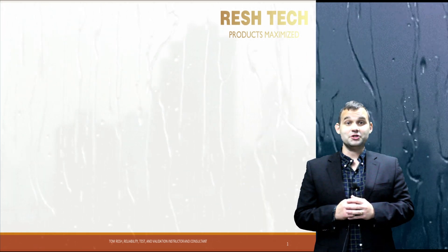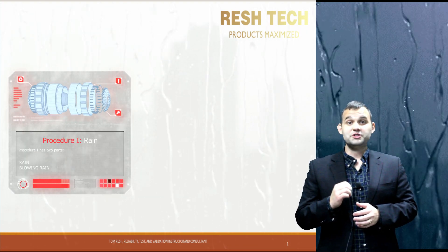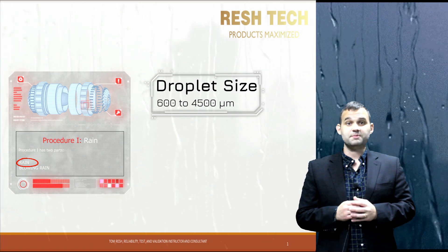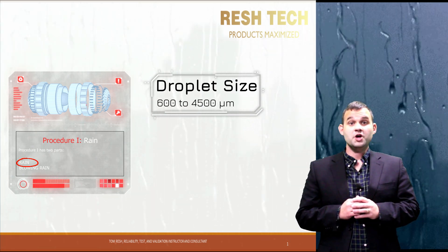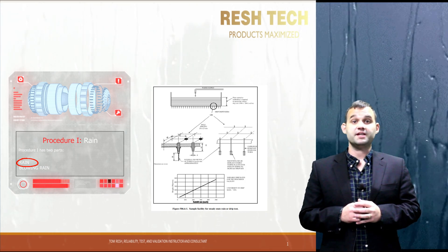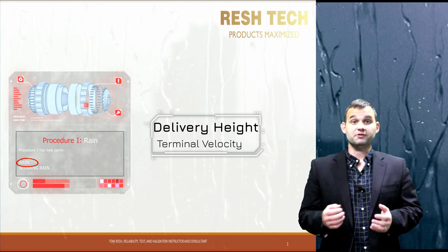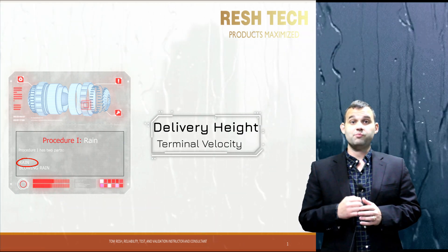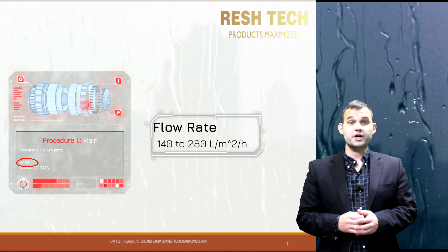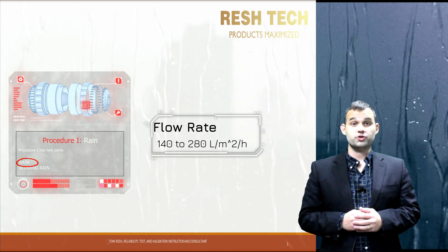Let's jump into Procedures 1, 2, and 3 for Method 506.6 Rain Testing. First up is Procedure 1, which is broken into two parts: rain and blown rain. Part A specifies a droplet size between 600 and 4,500 micrometers. Use spray nozzles as displayed in figure 506.6-1, positioned at a height sufficient to ensure droplets approach your system at terminal velocity — 9 meters per second or 29.5 feet per second. Ensure your flow rate is between 140 and 280 liters per meter squared per hour, tailored to your mission profile.